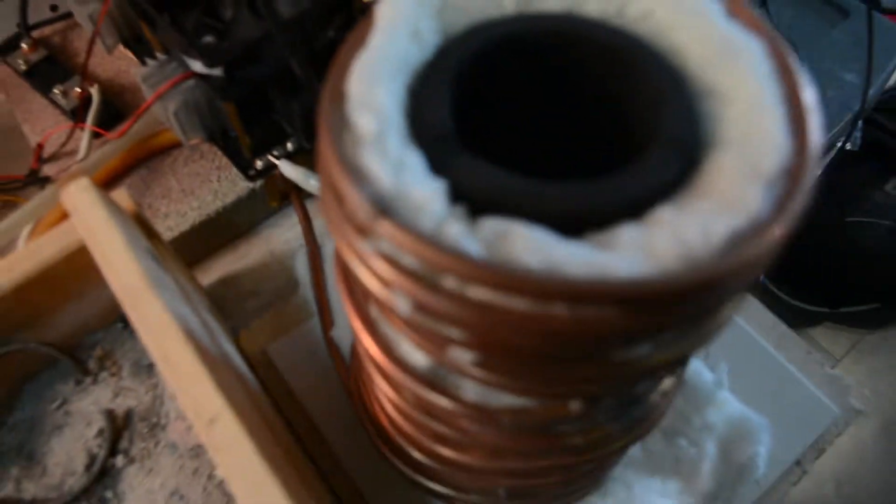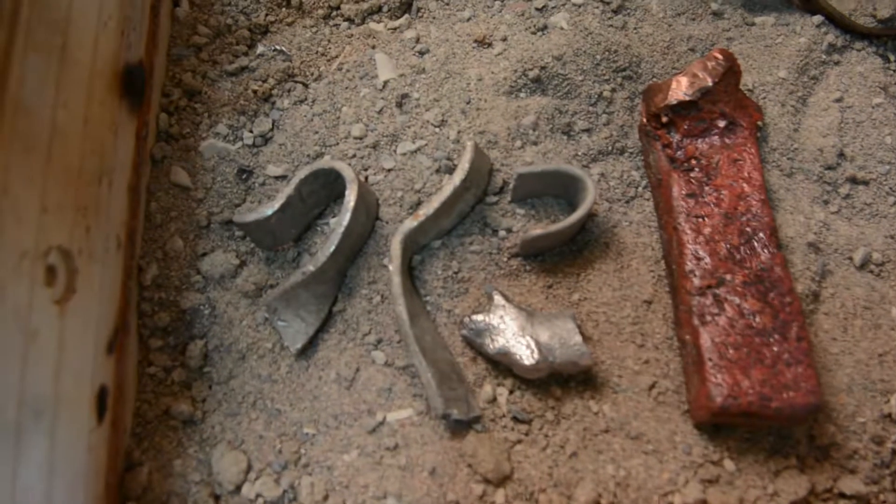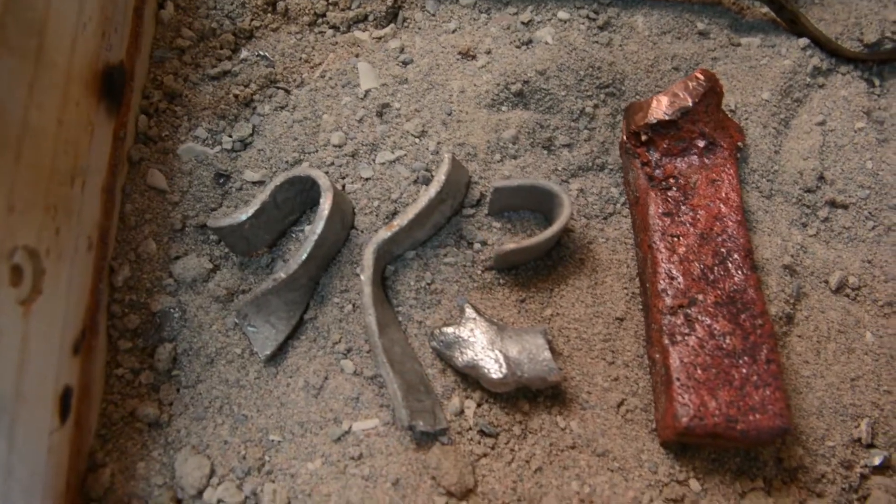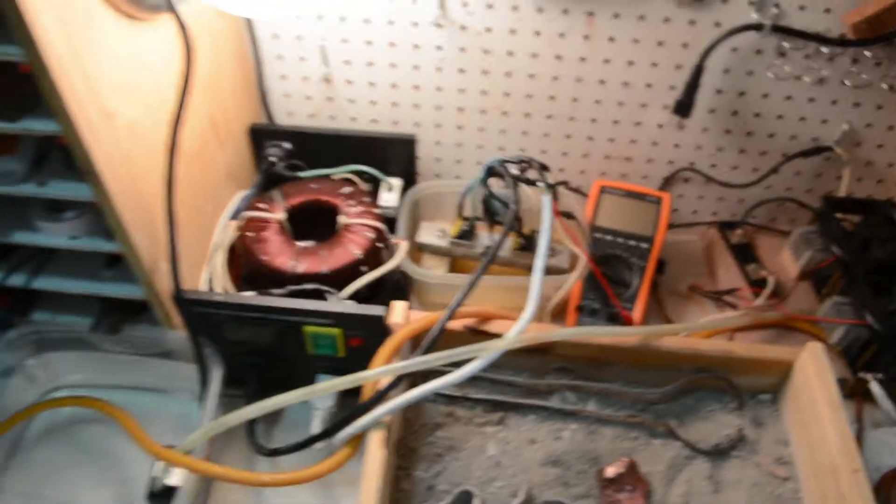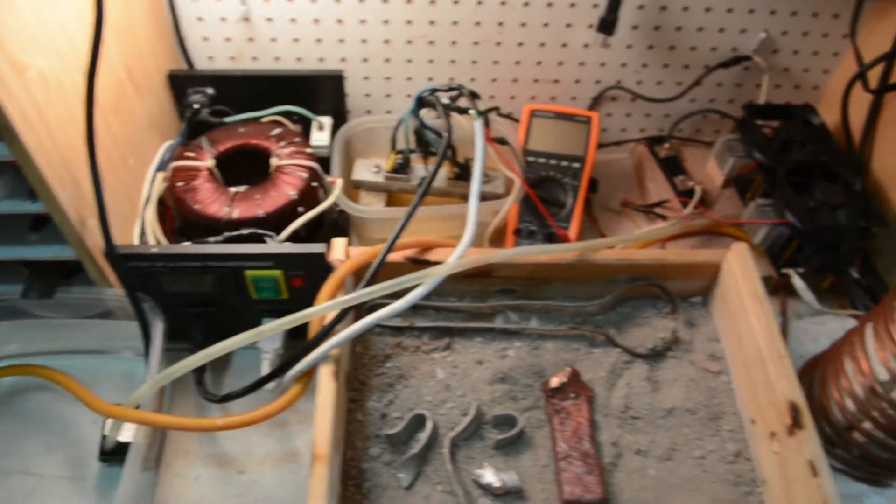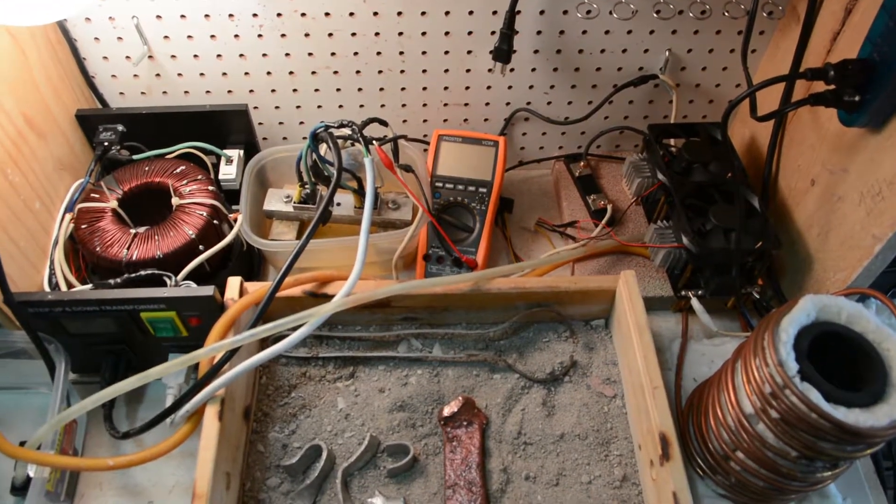We're going to melt this. First we're going to throw in aluminum and then we're going to throw in this copper ingot which I got from some wires. And we have a water pump here for cooling and that's what it looks like overall. Let's get to it!